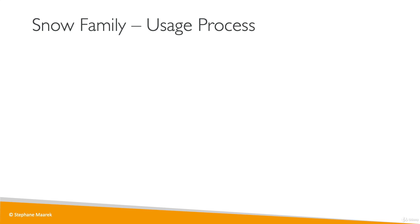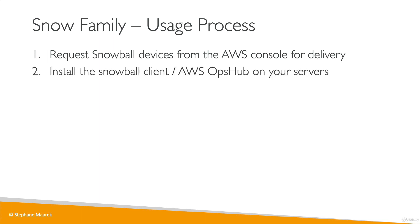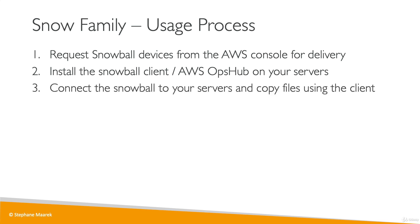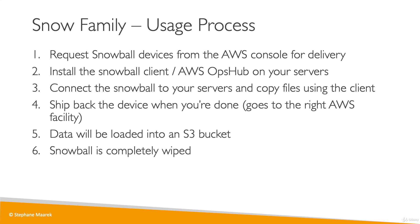To use a Snow Family device, you request a device from the console for delivery, then install the Snowball client or use AWS OpsHub on your servers. You connect the Snowball to the servers and start copying files. When ready, you ship the device back — it goes straight to the right AWS facility thanks to an e-ink marker. The data is loaded onto an S3 bucket, and then the Snowball is completely wiped according to the highest security measures.